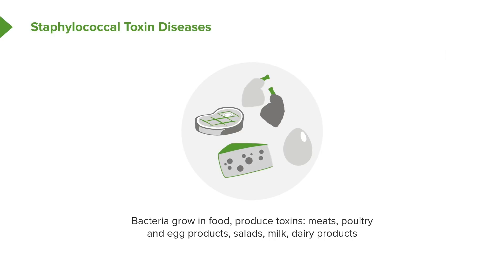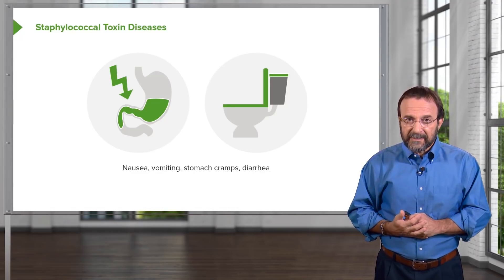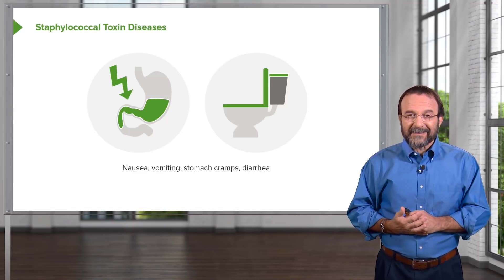Staphylococcal food poisoning typically occurs with meats including poultry, egg products, salads, milk, and dairy products. If food sits at room temperature for hours at a buffet, bacteria can grow and make their toxins. When you ingest these toxins, it causes nausea, vomiting, stomach cramps, and diarrhea.